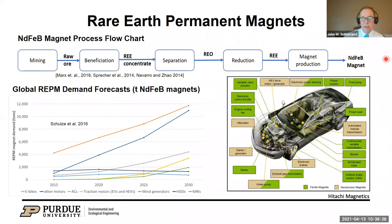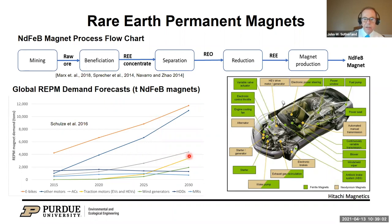Some products using a lot of rare earth permanent magnets include e-bikes and scooters seen around many college campuses, traction motors for EVs and hybrids, wind turbines, and — historically one of the largest applications — hard disk drives. There is an increasing desire to use rare earth permanent magnet motors across a variety of applications.